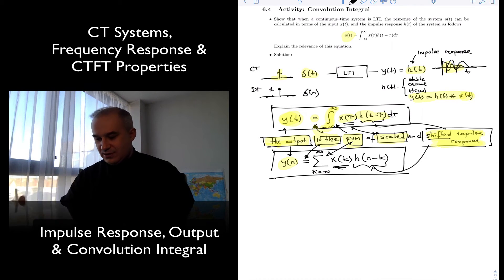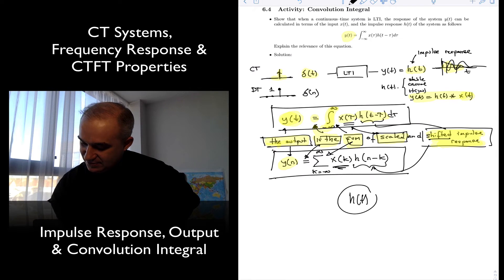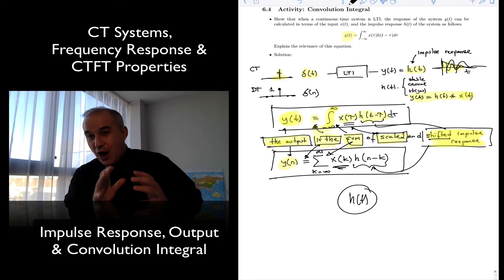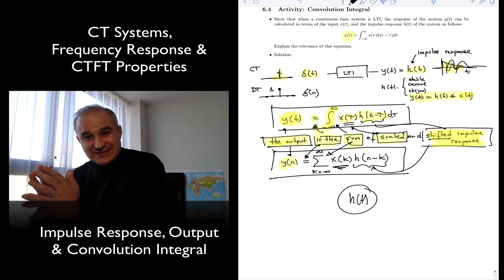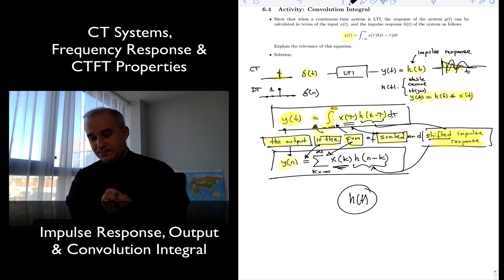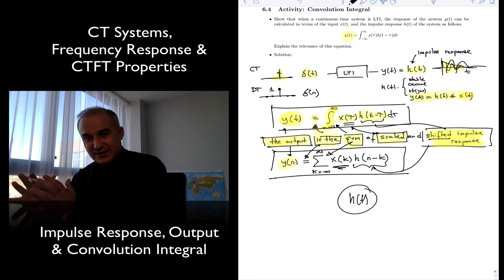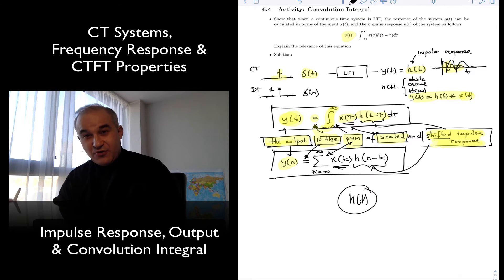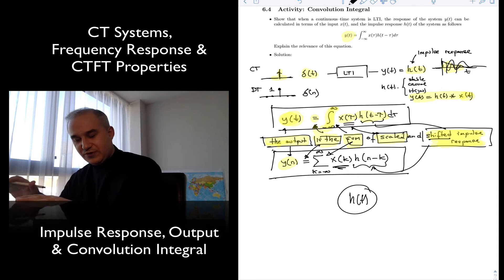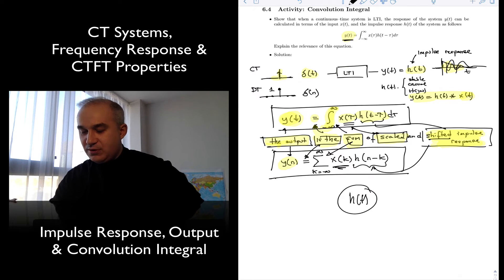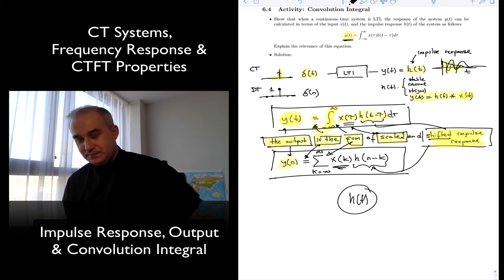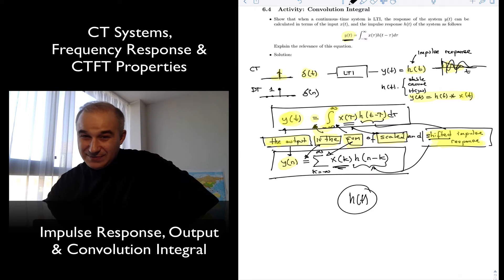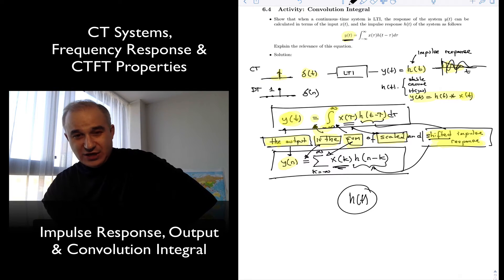H(t) is a signal — it is one particular output of a system when the input is an impulse. It's a complete characterization. We are going to see that it allows us to look at the frequency response, meaning if you do the Fourier transform of this signal you find how the system is going to respond to all frequencies, but it also allows us to find the output for any other input in the time domain with a convolution integral.